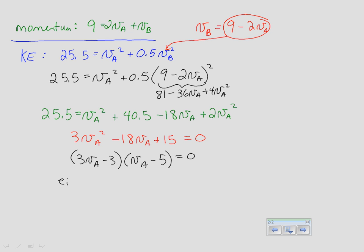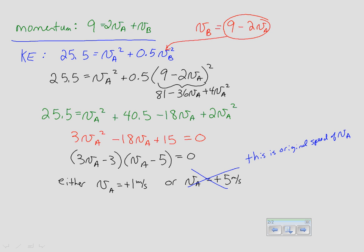From the factored equation, the velocity of object A is either +1 m/s or +5 m/s. Looking back at the original problem, the initial velocity of object A was +5 m/s — so that's not the answer we want. That was the original speed of VA. The solution VA = 5 m/s corresponds to the case where no collision occurs.